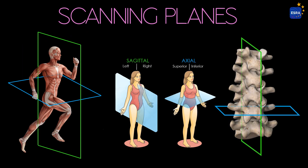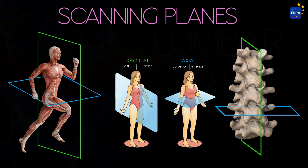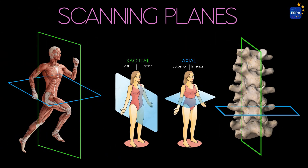Neuroaxis imaging can be performed in both the axial and sagittal planes, specifically the paramedian sagittal plane. While there are advocates for each projection method, the reality is that both planes should be used complementarily to obtain a comprehensive view of the neuroaxis. Only the cervical region is suitable for coronal imaging, in addition to axial and sagittal scanning.